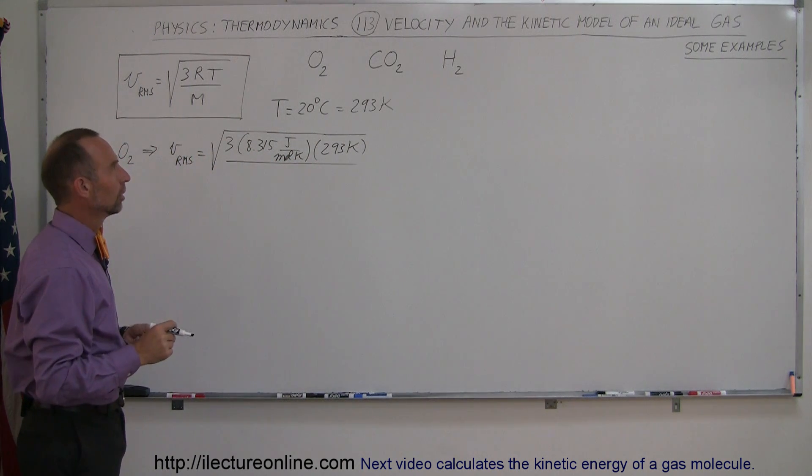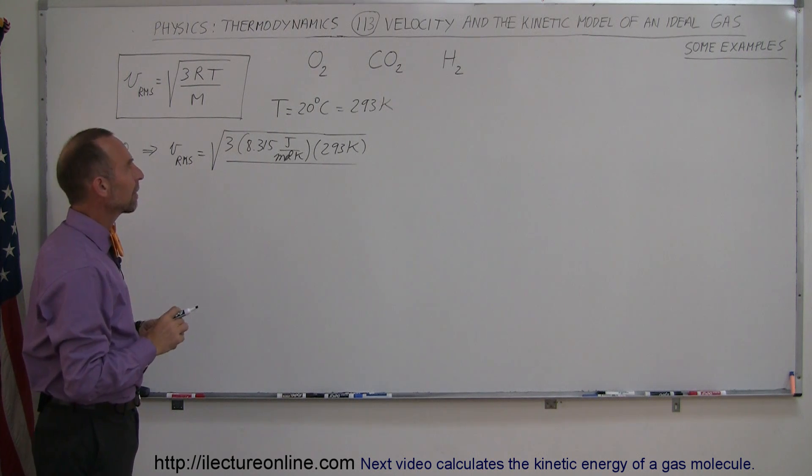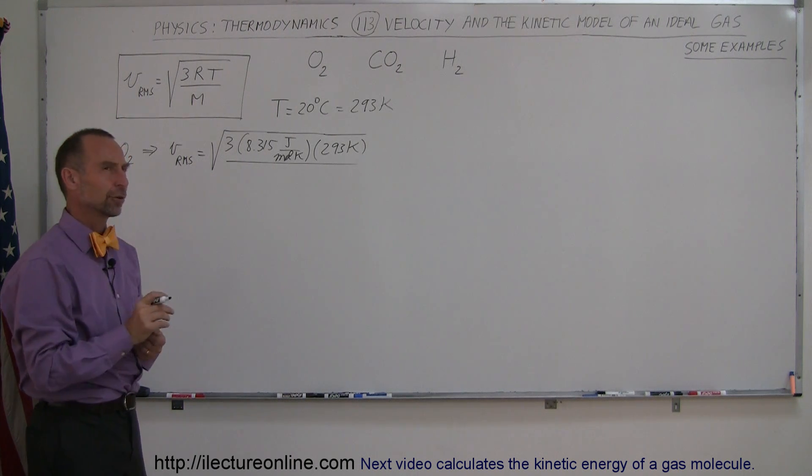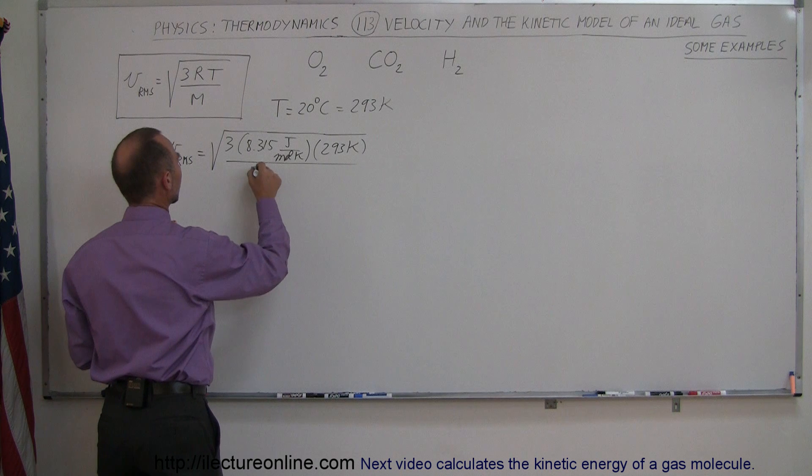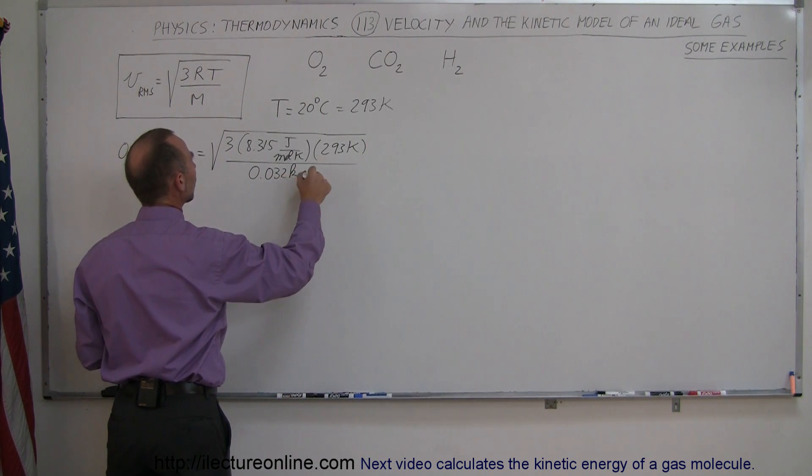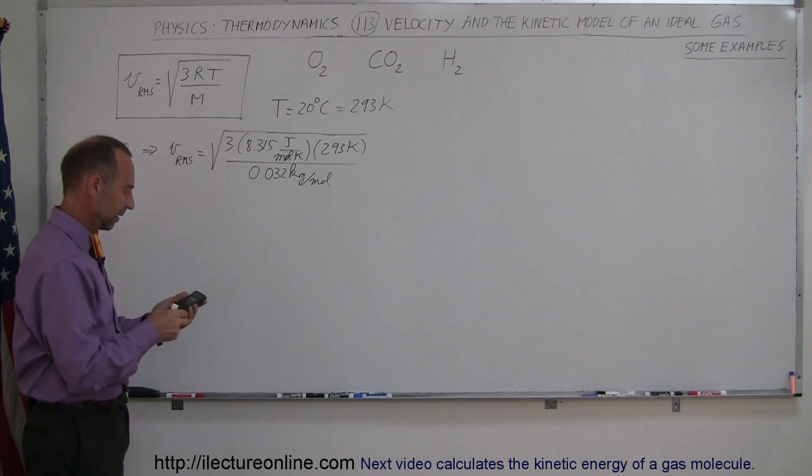Now, oxygen, the atomic number is 8, the mass is 16, atomic mass 16, but it's a diatomic molecule. That means it's 32 grams per mole, and we have to convert that to kilograms, so it's 0.032 kilograms per mole. The moles cancel out.